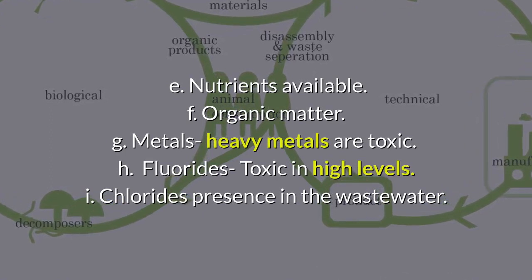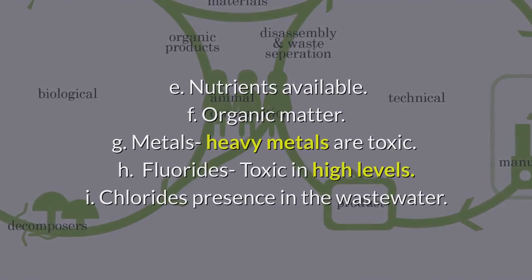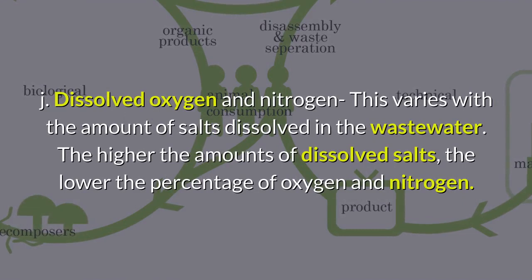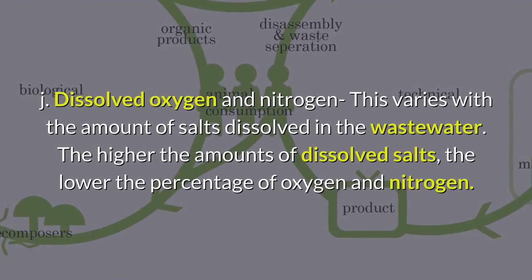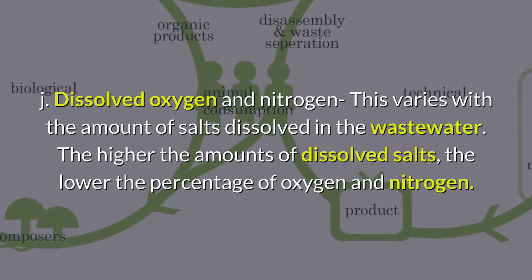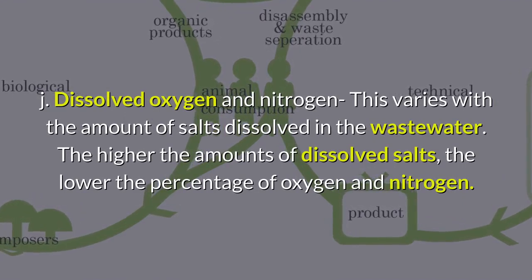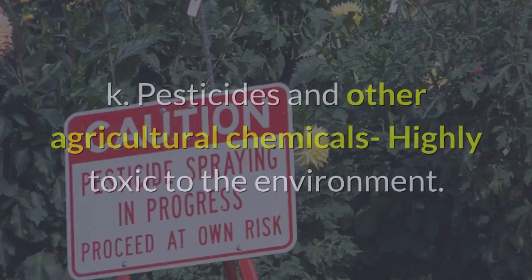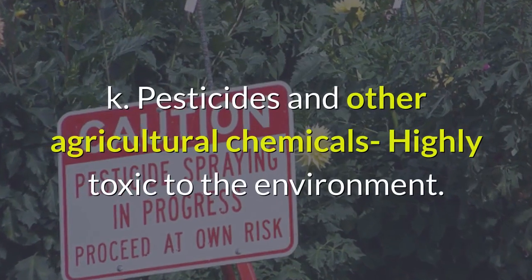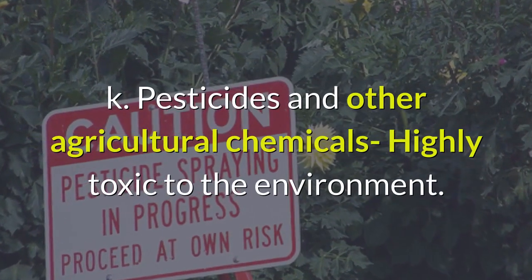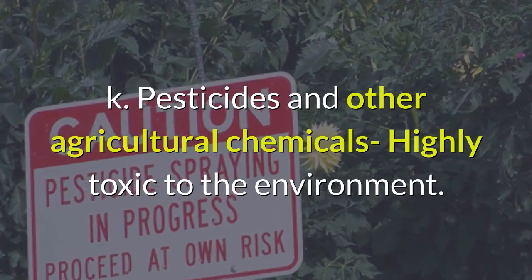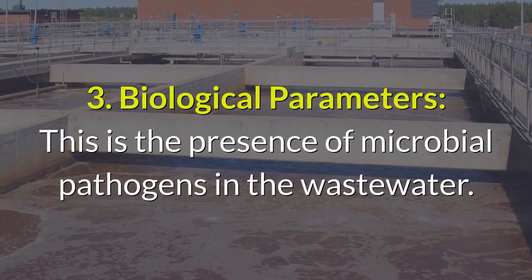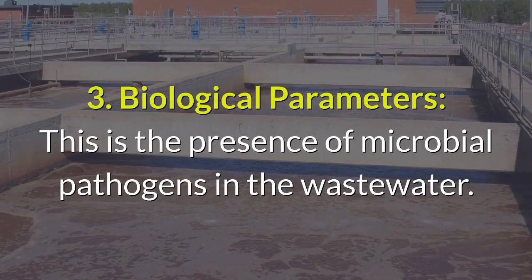Further chemical parameters include: nutrients available; organic matter; metals — heavy metals are toxic; fluorides, which are toxic in high levels; chlorides present in the wastewater; dissolved oxygen and nitrogen, which varies with the amount of salts dissolved — the higher the amount of dissolved salts, the lower the percentage of oxygen and nitrogen; and pesticides and other agricultural chemicals, which are highly toxic to the environment.